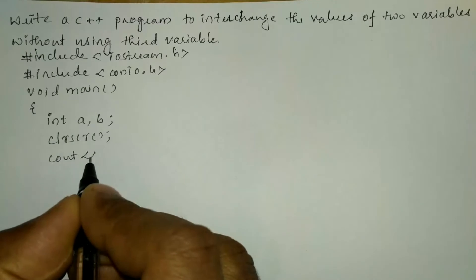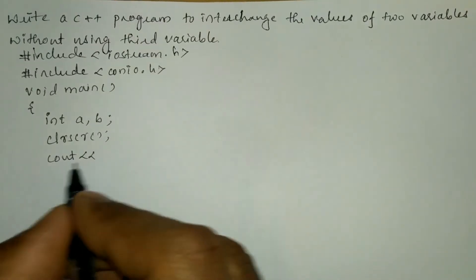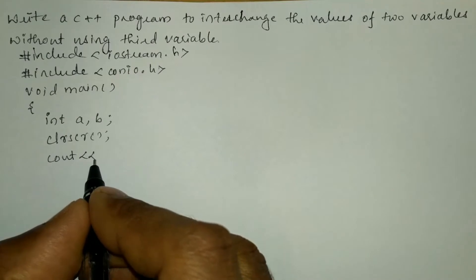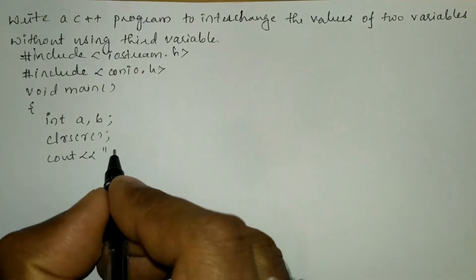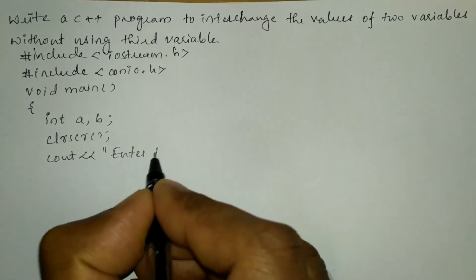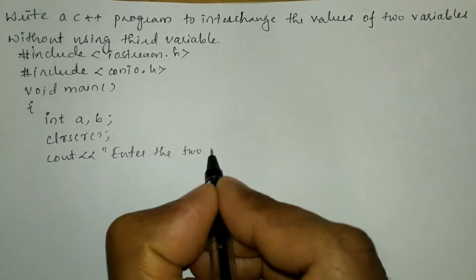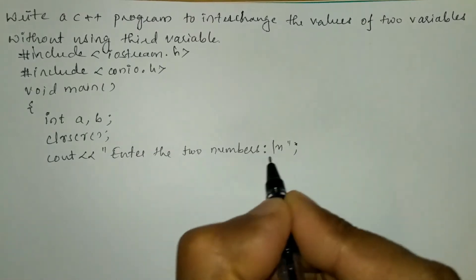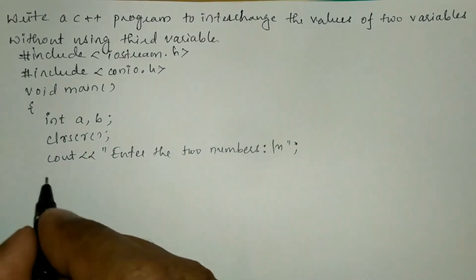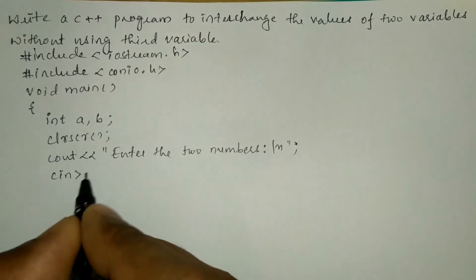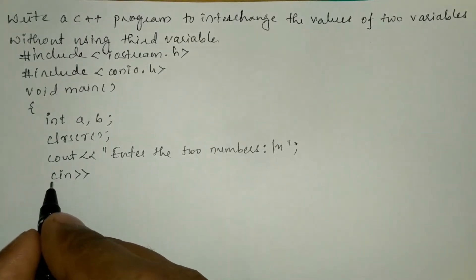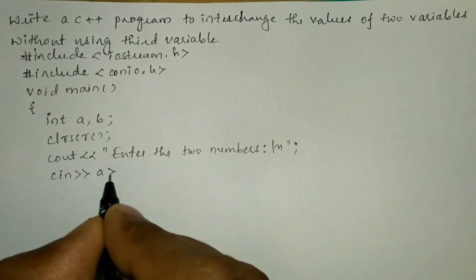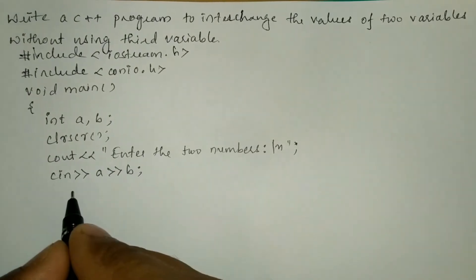Now I am going to ask the user to enter two numbers using a cout statement with stream insertion operator and in double quotation marks write 'enter the two numbers' followed by backslash n to bring the cursor to the next line. We receive the input from the user via cin with stream extraction operator a, stream extraction operator b, and semicolon.